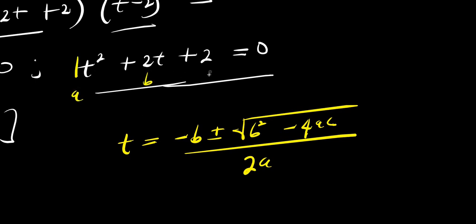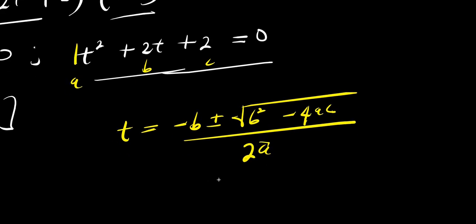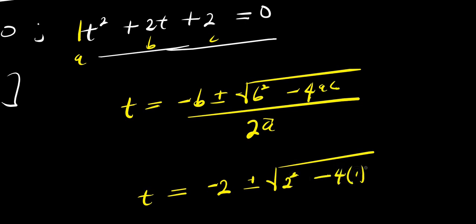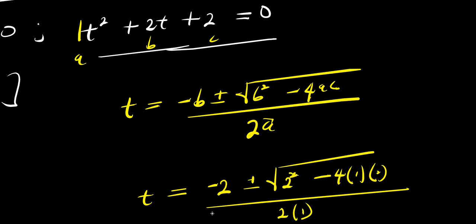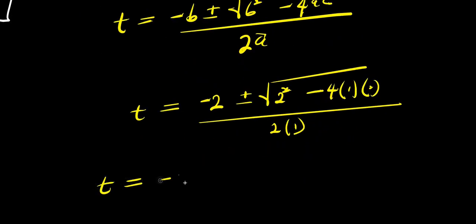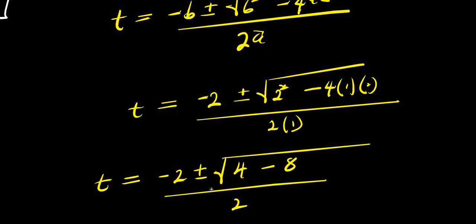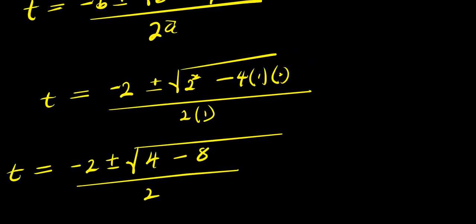Here, our a is 1, our b is 2, and our c is 2. So inserting: t equals negative 2, plus or minus square root of 2 squared minus 4 times 1 times 2, divided by 2 times 1. That gives t equals negative 2, plus or minus square root of 4 minus 8, divided by 2. So we have t equals negative 2, plus or minus square root of negative 4, divided by 2.